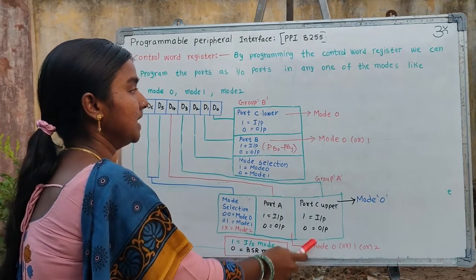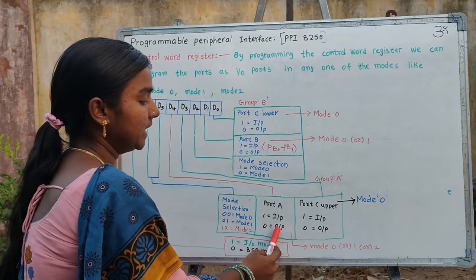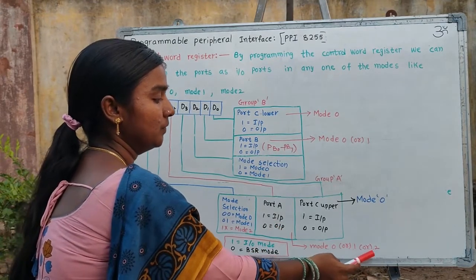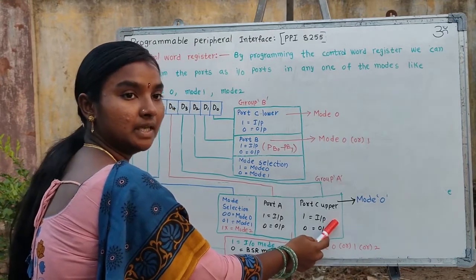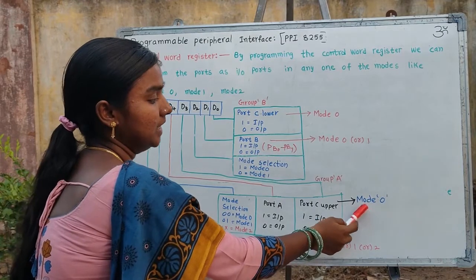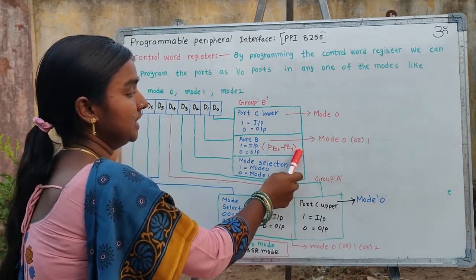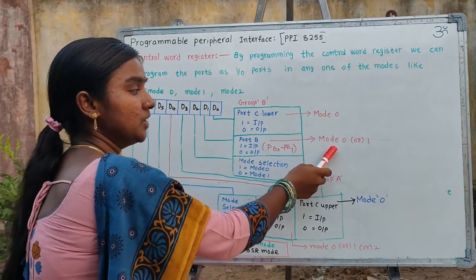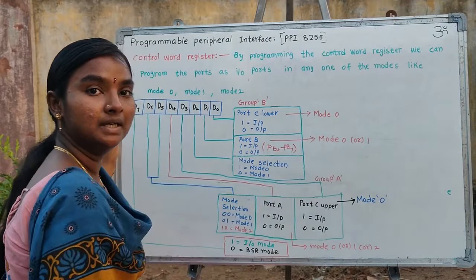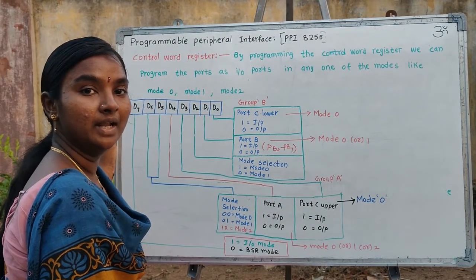Considering the total control word register, port A can work in mode 0, mode 1, or mode 2. Port C — both port C upper and port C lower — works in mode 0 only. Port B works in mode 0 and mode 1. This completes the explanation of the 8255 Programmable Peripheral Interface.